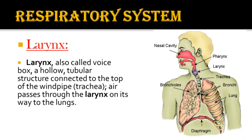The next organ is the larynx. You can see the purple-colored box-type structure in the picture — that is the larynx. It is a passageway for air between the pharynx above and the trachea below. The larynx is also called the voice box. It is a hollow, tubular-like structure connected to the top of the wind pipe. Air passes through the larynx on its way to the lungs via the trachea.